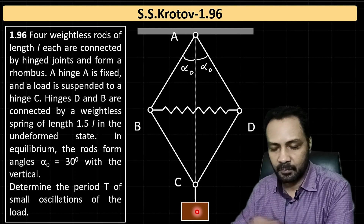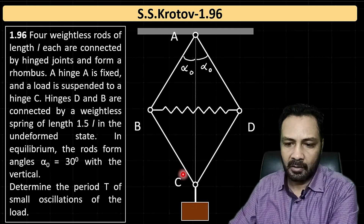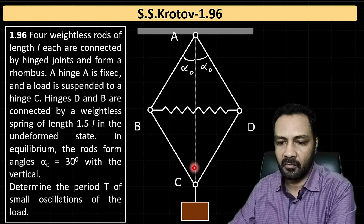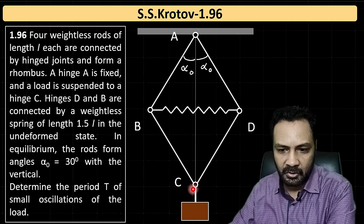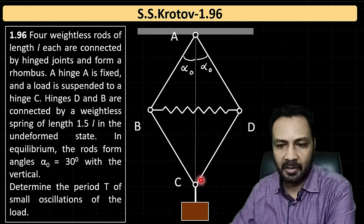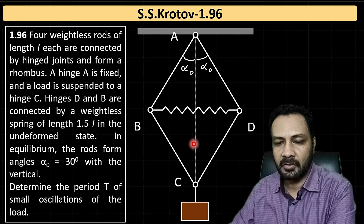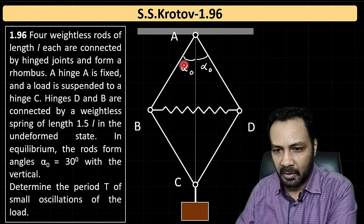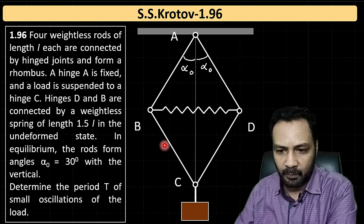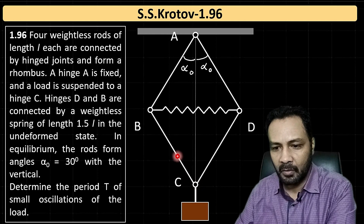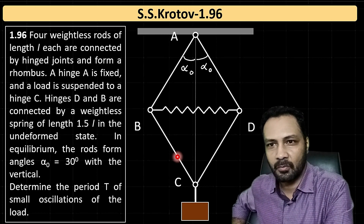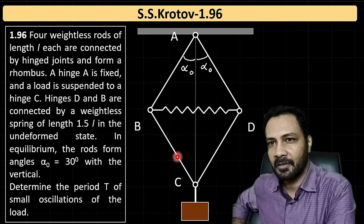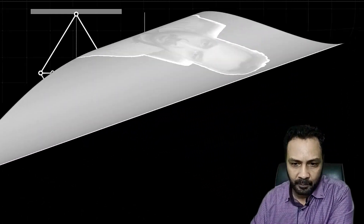Three forces act on the mass: its weight, and the tensions from the two rods. The vertical components of these tensions change with position, while Mg remains constant. So the variable part comes from the rod tensions' resultant. My approach will be to find the net vertical force on point C at a general angle θ, then apply a slight displacement from equilibrium and see how the force changes with displacement.